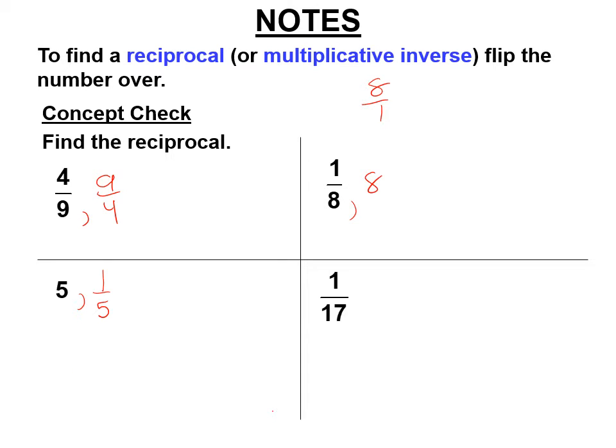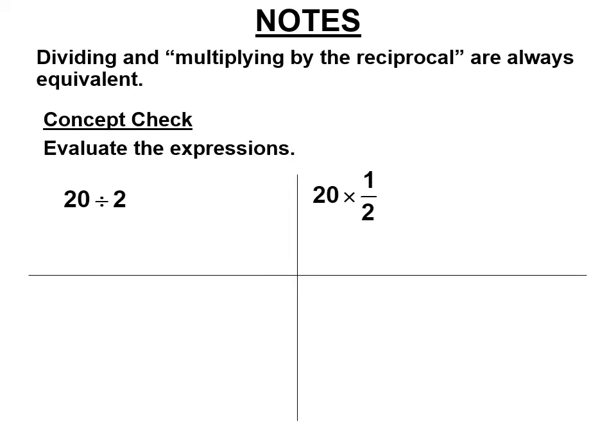So what's the reciprocal of 1 17th? Flip it over. Yes, it's 17 over 1. But it's 17. So dividing and multiplying by the reciprocal are always equivalent. What's 20 divided by 2? 10. So dividing and multiplying by the same number flipped over, multiplying by the reciprocal, always gets you the same answer.